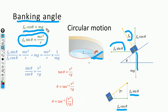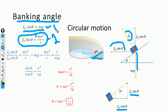We now have two equations: equation one is FN cos θ = mg, and equation two is FN sin θ = mv²/r, where mv²/r is the centripetal force. If we divide equation two by equation one, we get FN sin θ divided by FN cos θ equals mv²/r divided by mg.